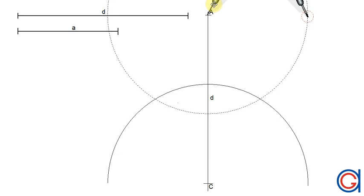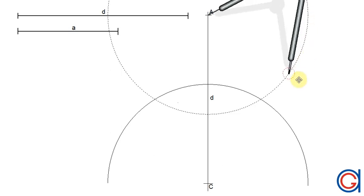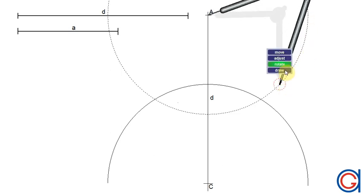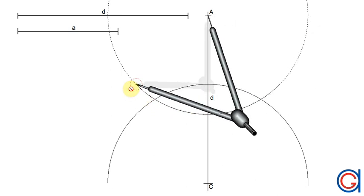This intersects our previously drawn arc at two points, which will be the final two vertices of the rhombus that we want to draw: B and D.